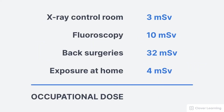When talking about occupational dosimetry, remember that not all radiation dose a worker receives during the year actually counts towards their occupational or working dose. Here's an example: during the course of a year, a radiographer receives 3 millisieverts in the x-ray control room, 10 millisieverts while working in fluoroscopy, 32 millisieverts from a series of back surgeries on himself, and 4 millisieverts from radiation exposure in his own home. What was the worker's total occupational dose?